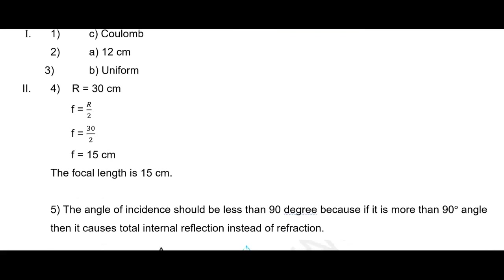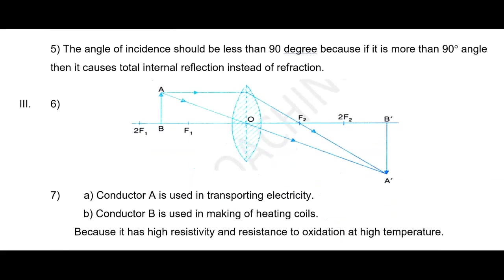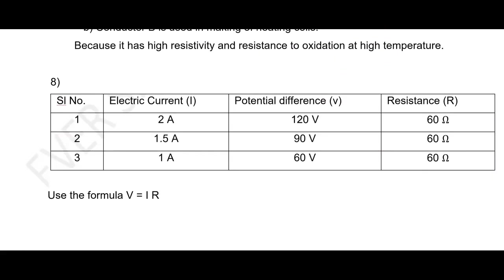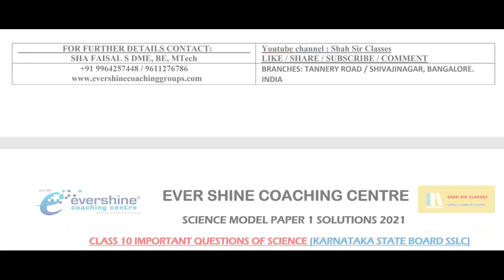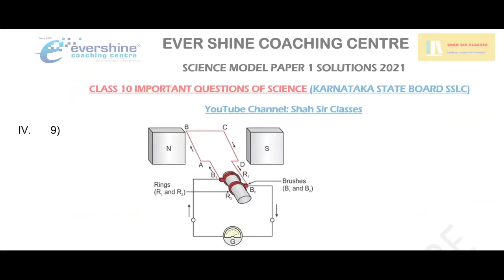This is our Part A. As you can see, second main question number 4, question number 5 and this is third main, this is question number 7, question number 8. Children, in this they have given some blanks — use the formula V equals IR and find the unknown values. Children, if you have not yet subscribed to our YouTube channel Shasar Classes, do subscribe it and do not forget to click the like button and comment below how was this class, and also let me know which video you want me to make next, and share this video as much as possible with all your friends and classmates.